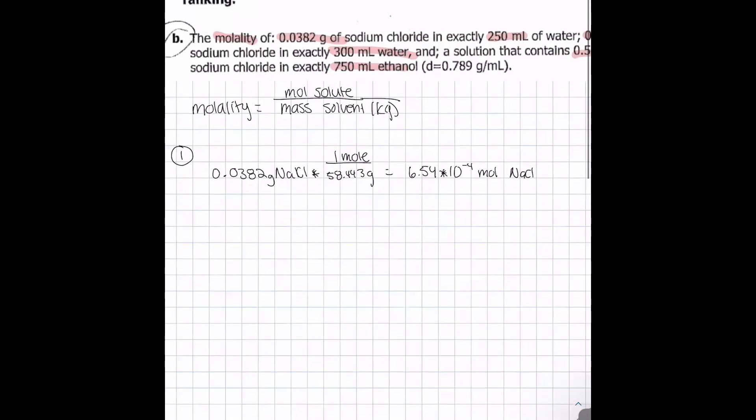For the mass of the solvent, we have 250 milliliters of water, and we know that the density of water is 1 gram equals 1 milliliter. We have to convert to kilograms because the molality equation demands kilograms.